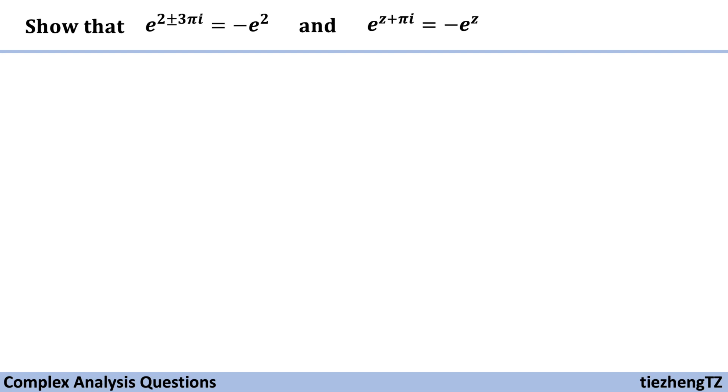This video will introduce two very simple questions to show that e to the power of 2 plus minus 3 pi i equals minus e square, and also to prove that e to the power of z plus pi i equals minus e to the power of z.